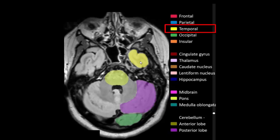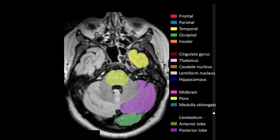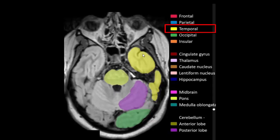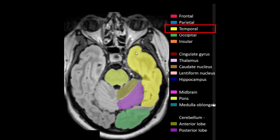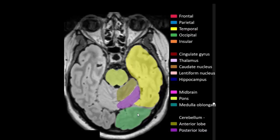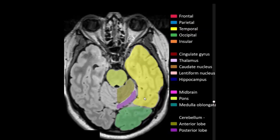Right and left temporal lobe, right and left posterior lobe of cerebellum. Occipital lobe. Right and left temporal lobe, anterior lobe of cerebellum, posterior lobe of cerebellum. Occipital lobe.